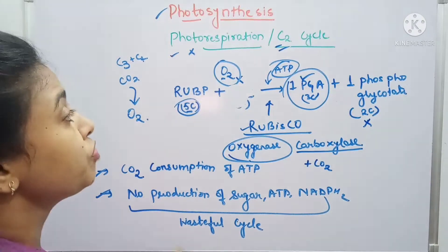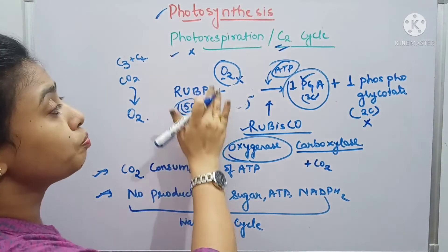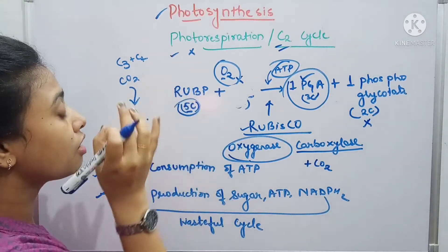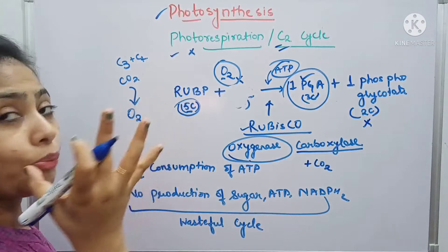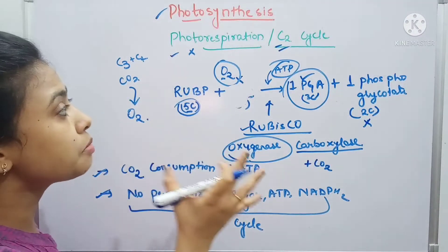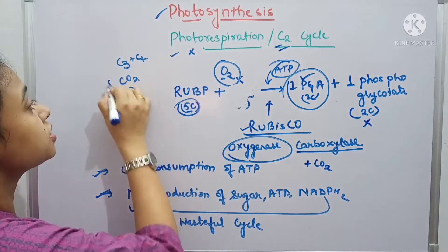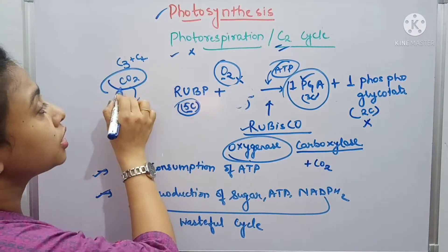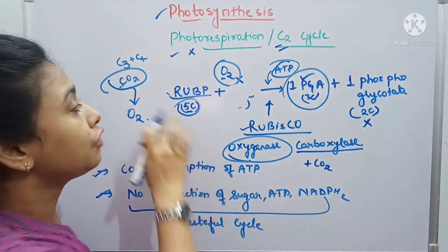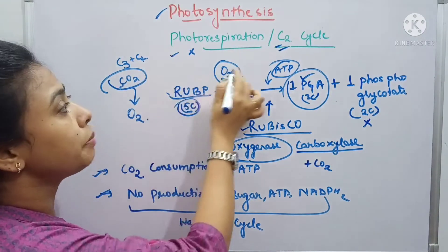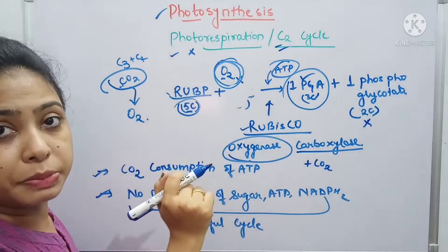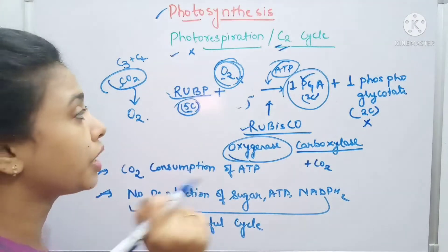That is why plants have to maintain an optimum or maximum concentration of CO2, so that CO2 will bind with RuBP and will not allow the binding of O2 with RuBP.